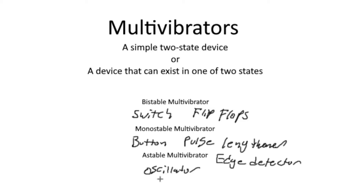Another name for an astable multivibrator is just an oscillator — a circuit that oscillates between high and low. The oscillator circuit isn't that difficult to build, but there are a lot of factors and variables that take a long time to discuss, so we're going to make oscillators its own video. All you need to know for now is that when we talk about oscillators, we're typically referring to astable multivibrators, and vice versa.